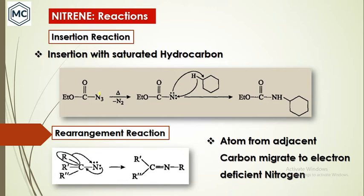The second reaction is insertion. An azide on thermolysis gives nitrene, and this nitrene can then be inserted into a saturated hydrocarbon C–H bond. The hydrogen is added to one side and nitrogen to the carbon, forming a cyclized product.